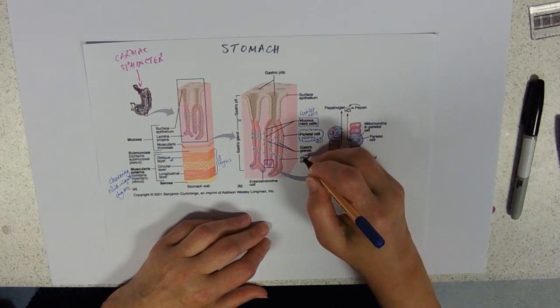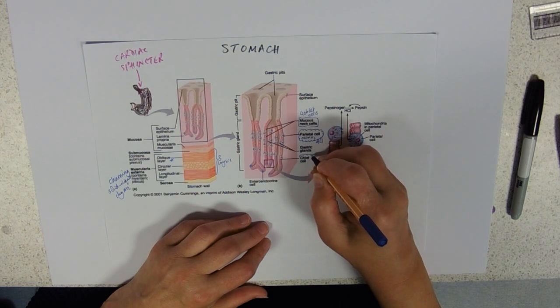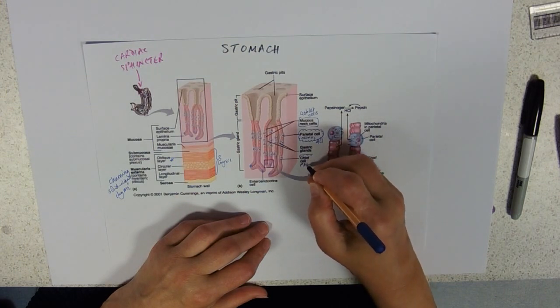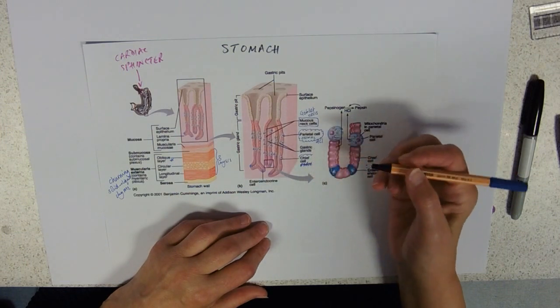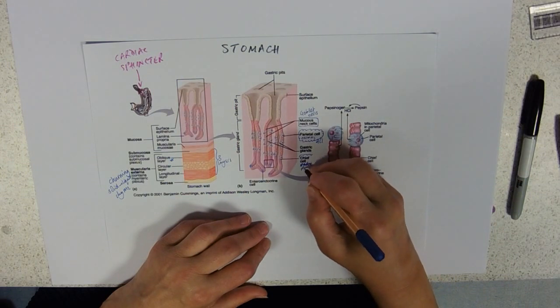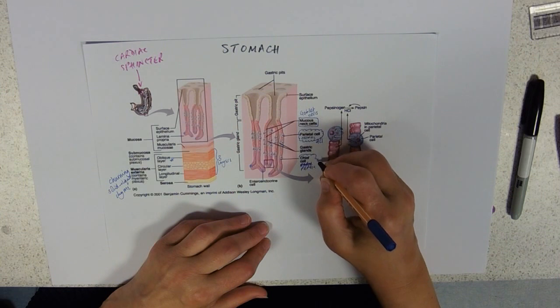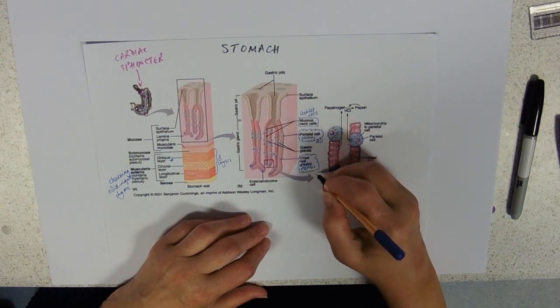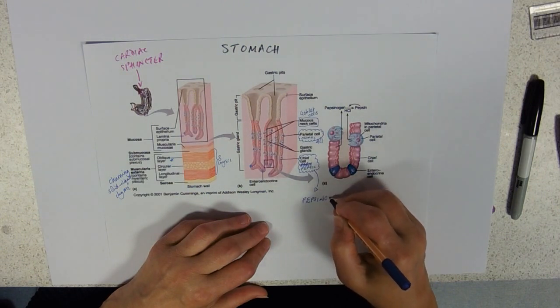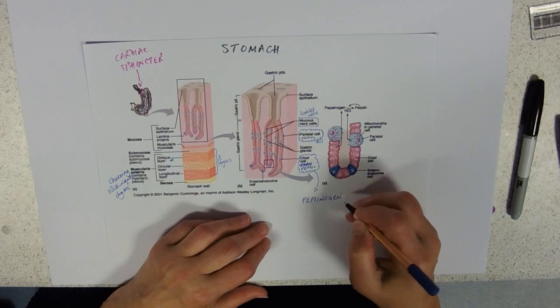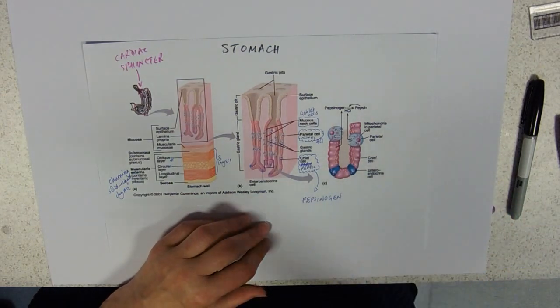At the bottom we've got these chief cells—you'll also see those called peptic cells—and these churn out pepsinogen. The cells do not produce active enzyme.